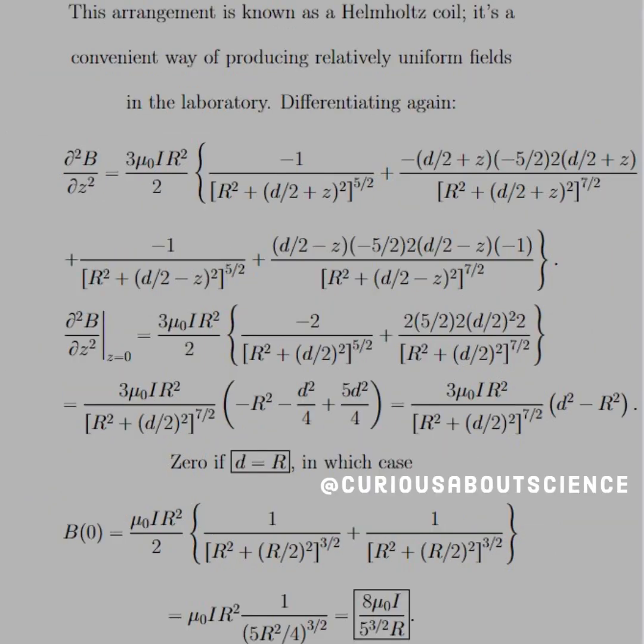All right, moving on. So for those who don't know, this arrangement is known as a Helmholtz coil. It's a convenient way of producing relatively uniform fields in a laboratory.